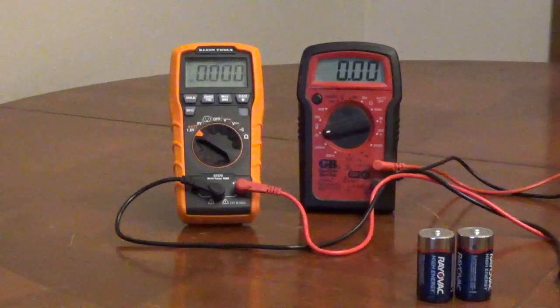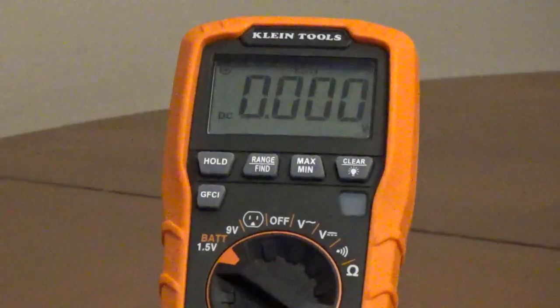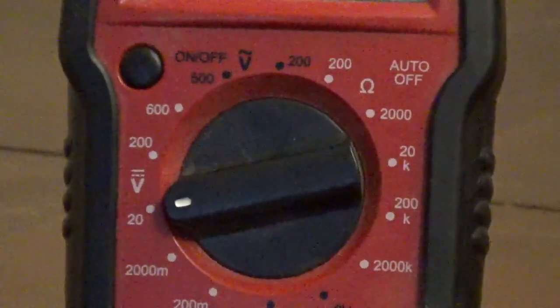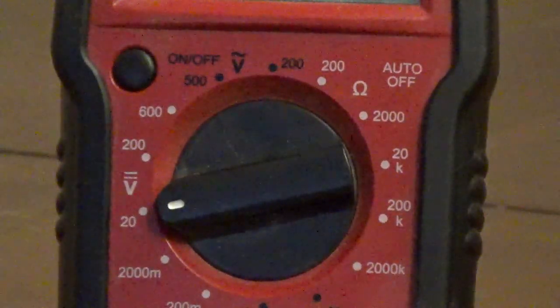To test a non-rechargeable battery with a multimeter, turn the dial to 1.5 or 9 volt if that's an option, or turn the dial to the DC settings and the number just above what you're testing.